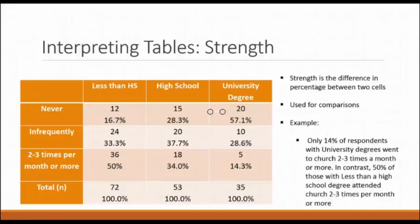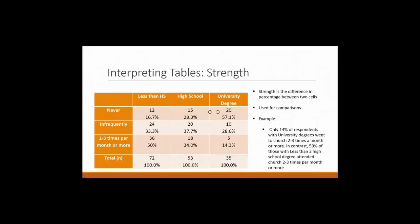Let's take a look at this crosstab to understand strength. This crosstab examines the role of education on church attendance. Strength is the difference in percentage between two cells. We can use strength to make comparisons. Comparing between two column categories, we can look at less than high school and university degree. We can see that 50% of the less than high school sample went to church two to three times per month or more. On the other hand, the more educated university degree sample had a proportion of 14.3% of the sample going to church two to three times per month or more. So we can conclude that within the sample, those with less education went to church more often than those with higher education.